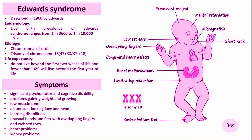Edwards Syndrome, also known as Trisomy 18, was first described by British obstetrician John S. Edwards in 1960. Edwards Syndrome is a serious genetic disorder caused by the presence of an extra chromosome 18 in a person's cells.